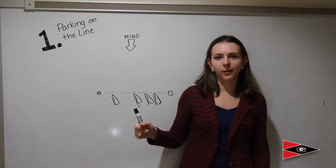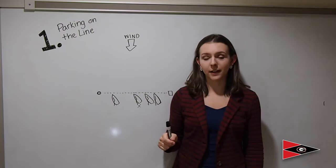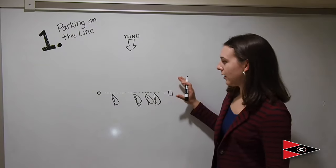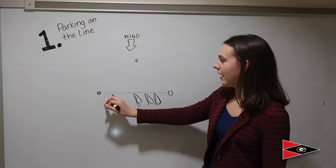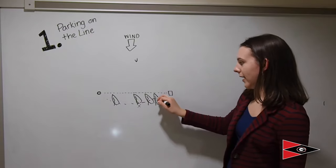The other thing you want to keep an eye out for is the current and how that's going to affect your parking. If your current is coming from the same direction as the wind, that's going to bring all the boats down to a line sag.